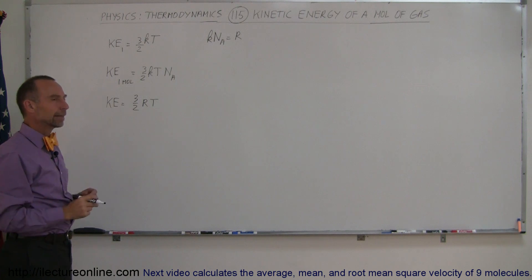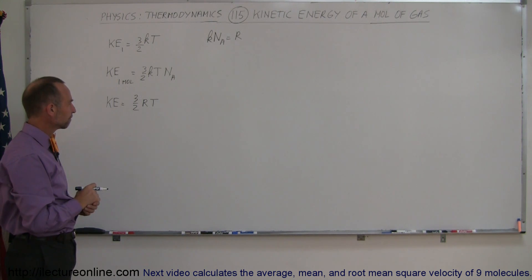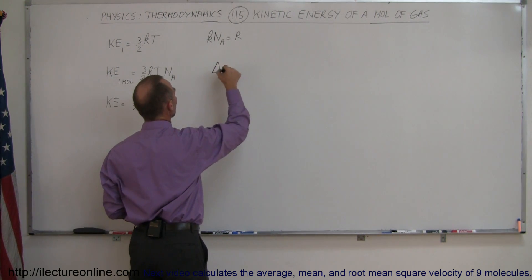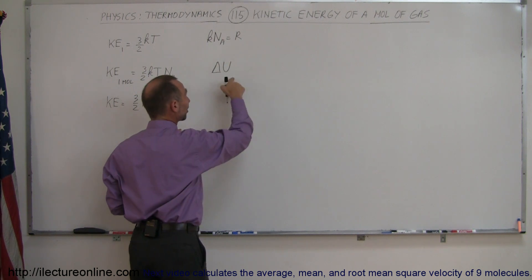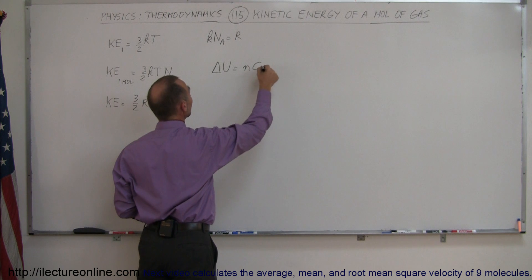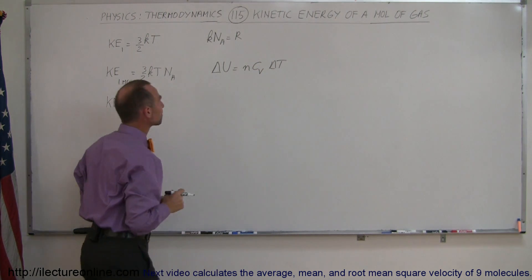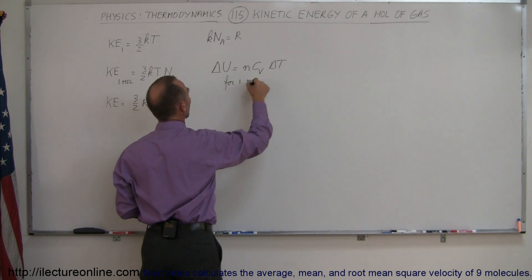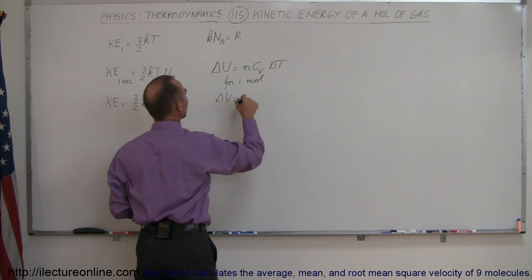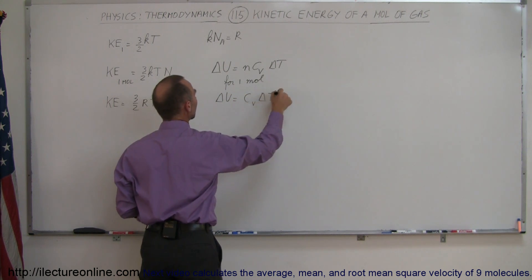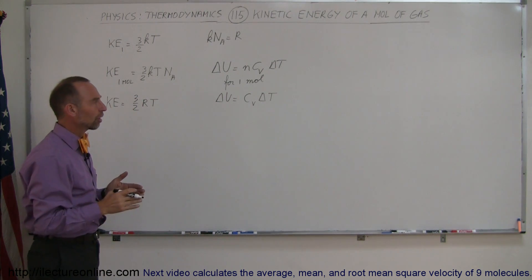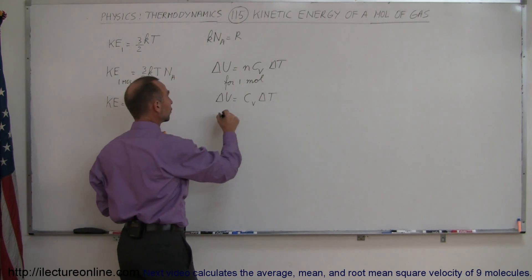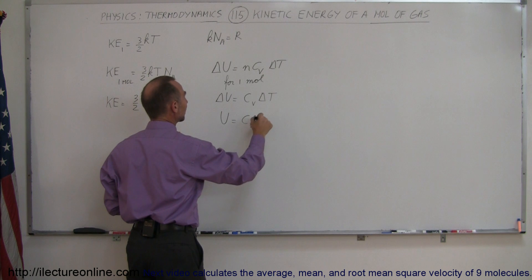Now take a look at that — that should look very familiar. Let's take a look at the internal energy of a gas again. The internal energy of a gas, or the change in the internal energy of a gas, is equal to N C sub V delta T. For one mole, the change in internal energy is equal to C sub V times delta T. Assuming we start from zero temperature, the internal energy U is simply equal to C sub V times T.